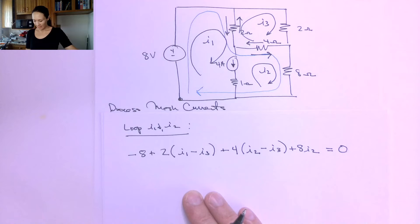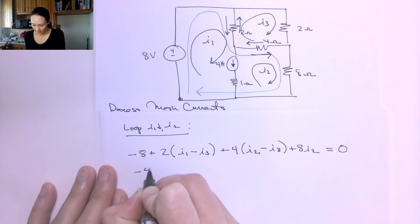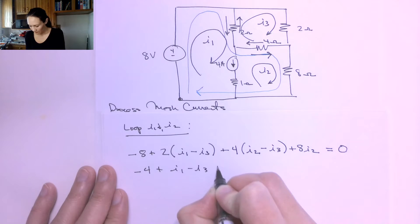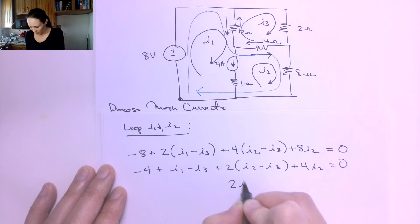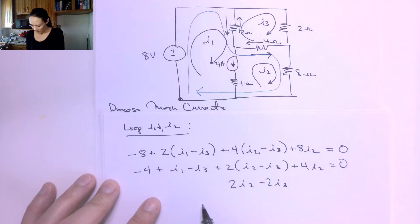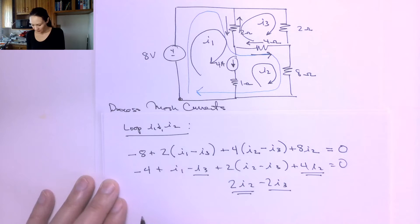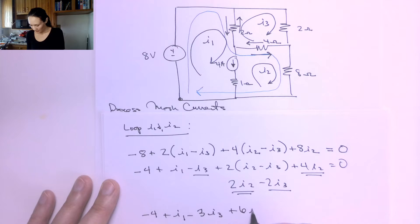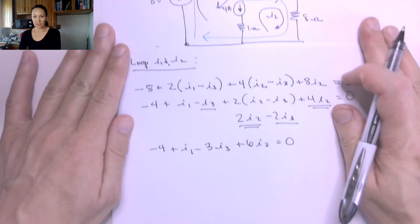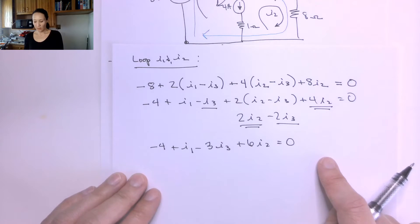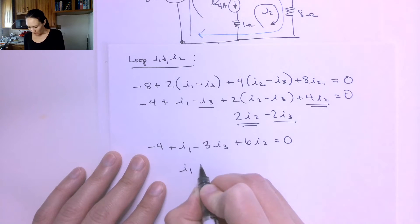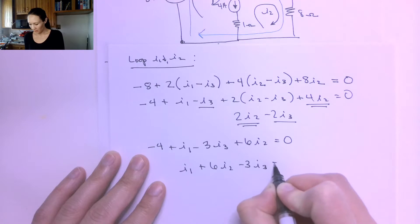I'm going to simplify this equation. Dividing everything by 2 gives: negative 4 plus (I1 minus I3) plus 2(I2 minus I3) plus 4I2 equals zero. Distributing and combining like terms, this gives: negative 4 plus I1 minus 3I3 plus 6I2 equals zero. Putting it in standard form with the constant on the right-hand side: I1 plus 6I2 minus 3I3 equals 4.